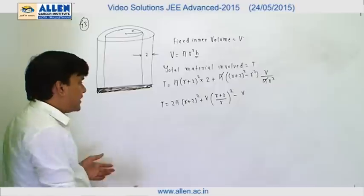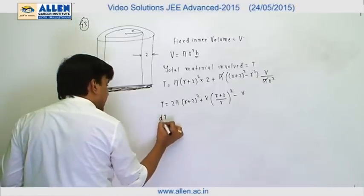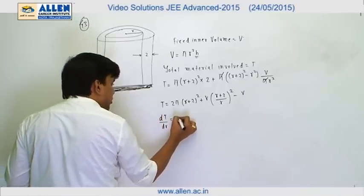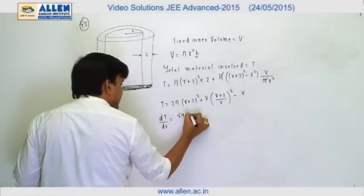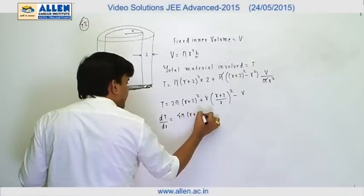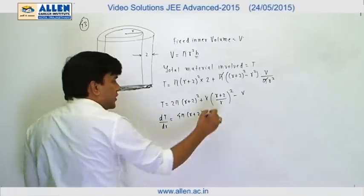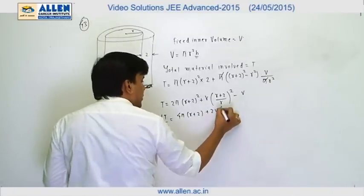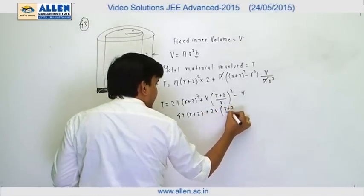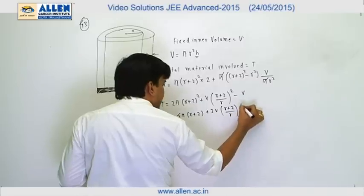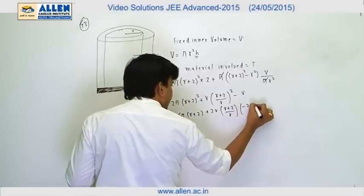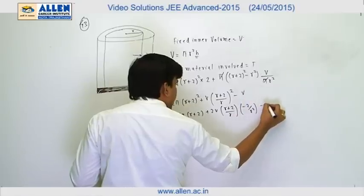Now for minimizing this, we can differentiate this with respect to r. So dT/dr is 4π (r + 2) and this is 2v (r + 2) upon r, and by differentiating (r + 2)/r, this is minus 2/r², and this equals 0.